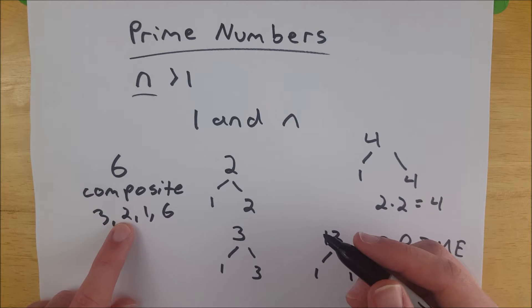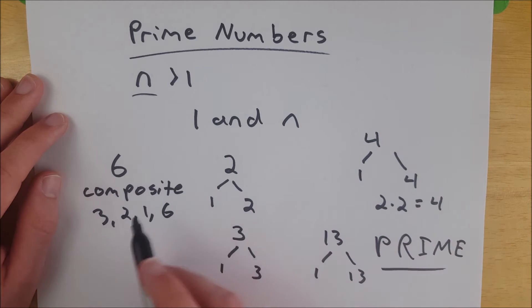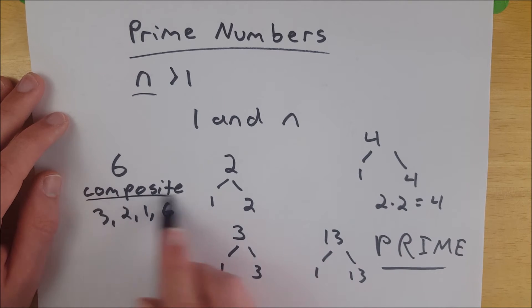All of these numbers go into six. Three goes in twice, two goes in three times, one goes in six times and six goes in once. So six is not prime, it is composite.